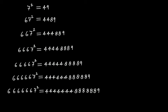Welcome to another video tutorial on patterns of square numbers. In this tutorial we are going to discuss one more pattern of square numbers. If you look at these numbers on the left hand side, these are some numbers and if we take their squares we get these numbers: 49 is the square of 7, 4489 is the square of 67, and 444889 is the square of 667.